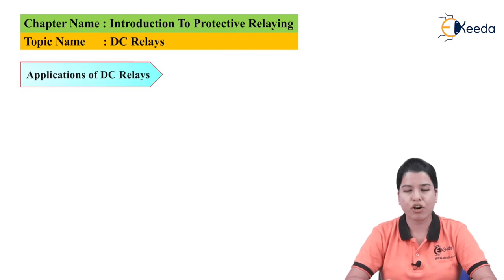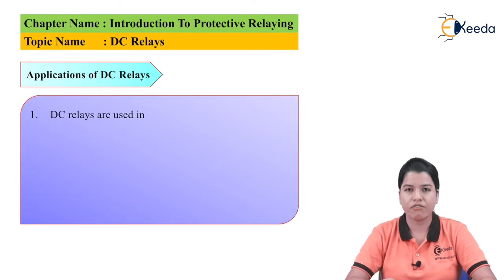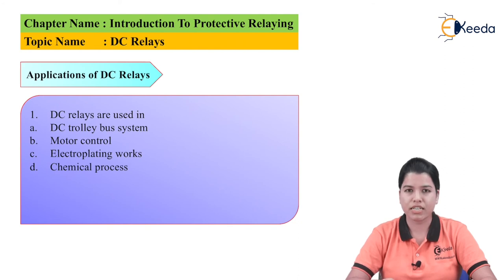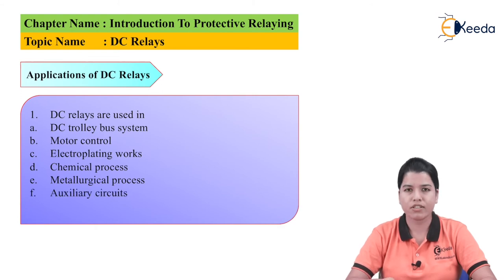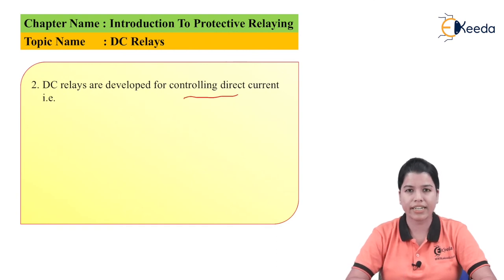The applications of DC relays include DC trolley bus systems, motor control, electroplating works, chemical processes, metallurgical processes, auxiliary circuits, and control circuits.